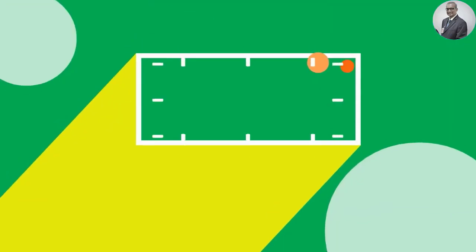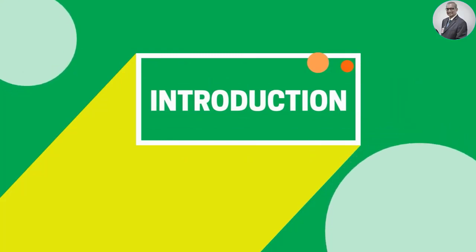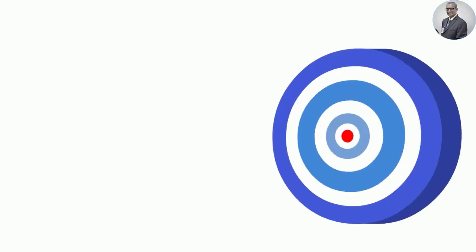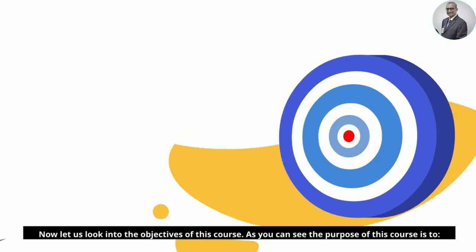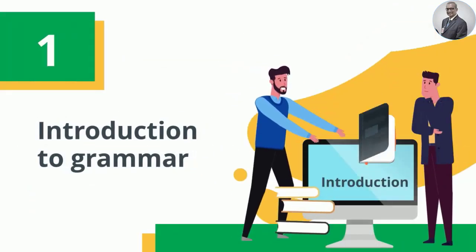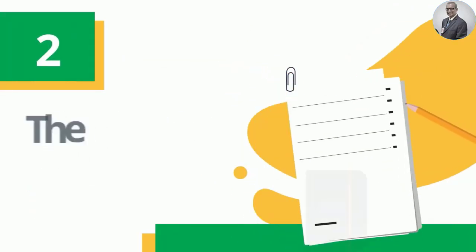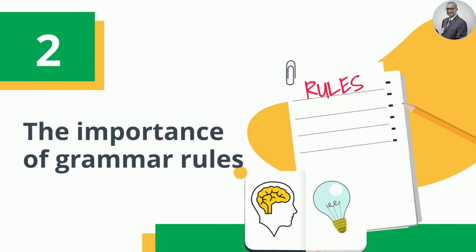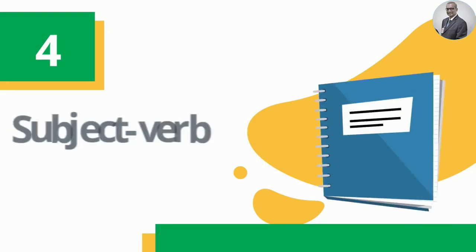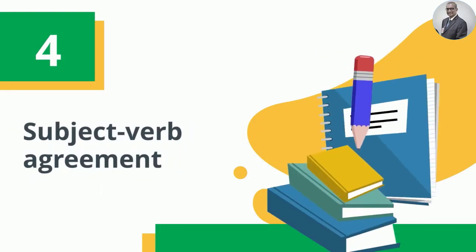Let us start with the introduction. Now let us look into the objectives of this course. As you can see, the purpose of this course is to cover: 1. Introduction to grammar. 2. The importance of grammar rules. 3. The definitions of the rules. 4. Subject-verb agreement.